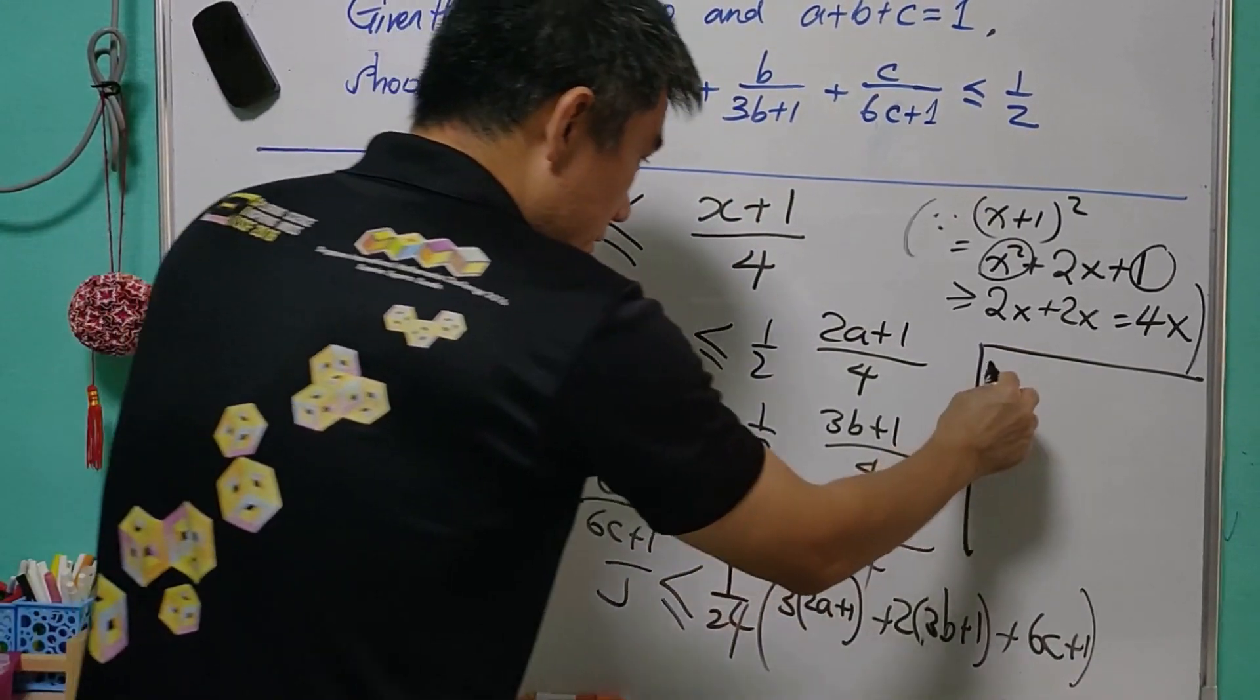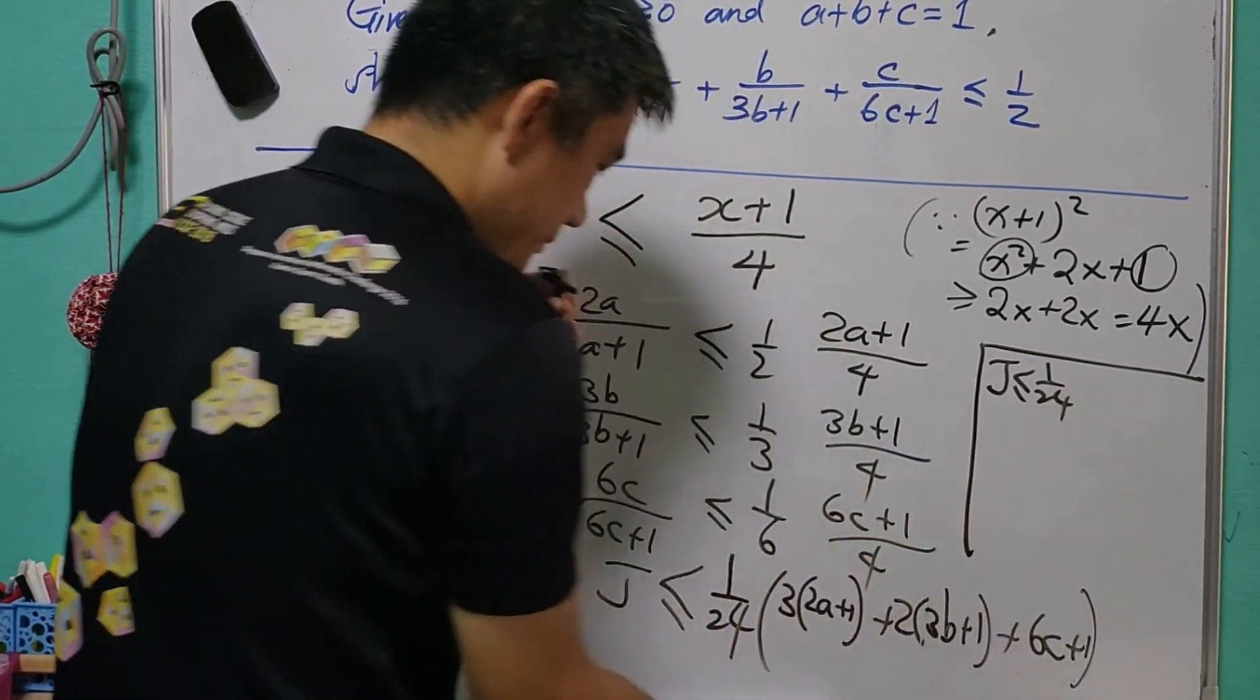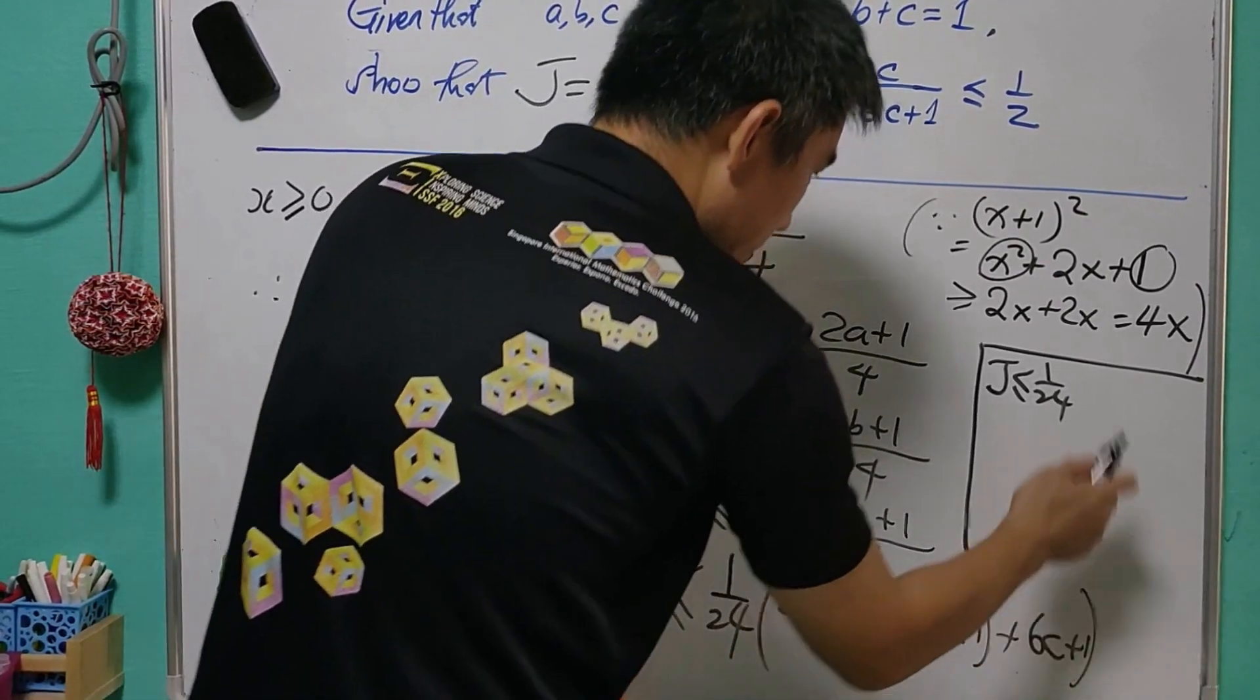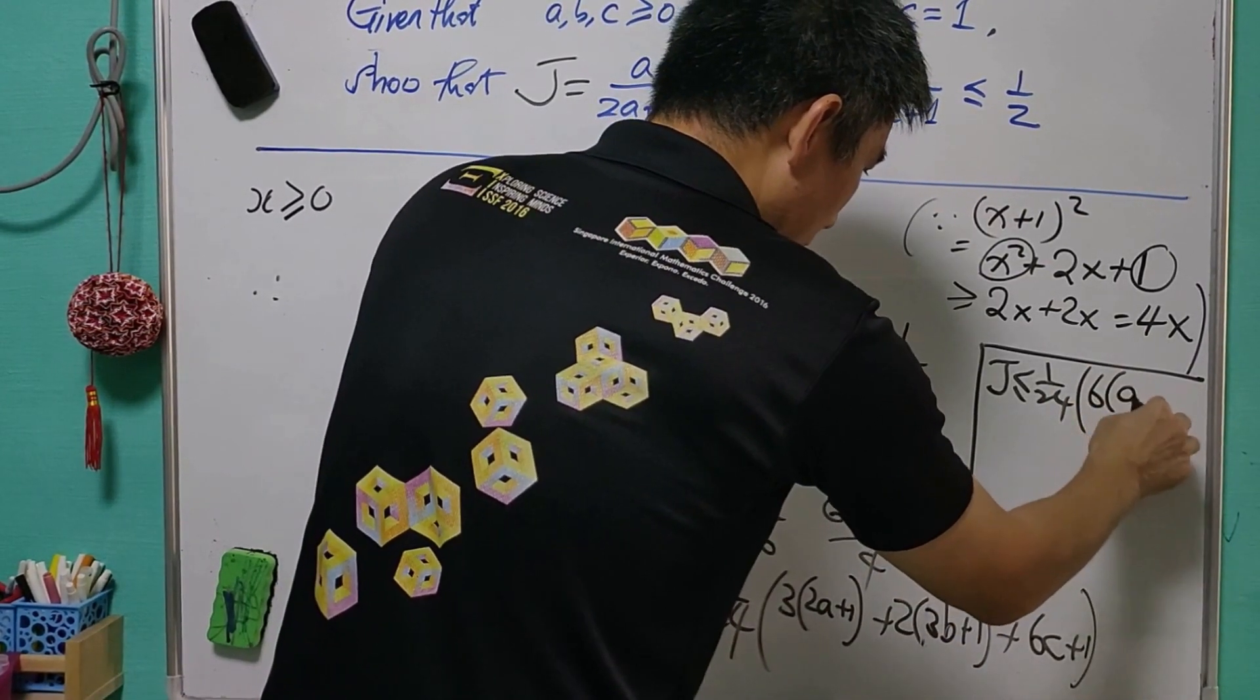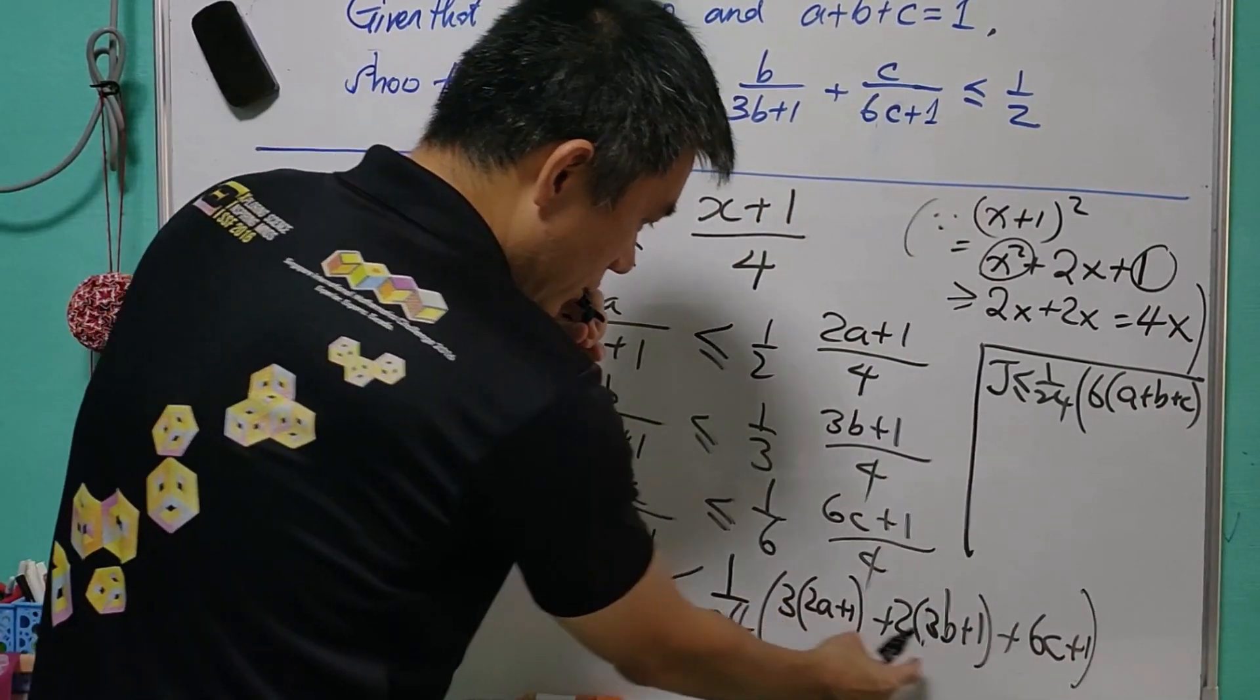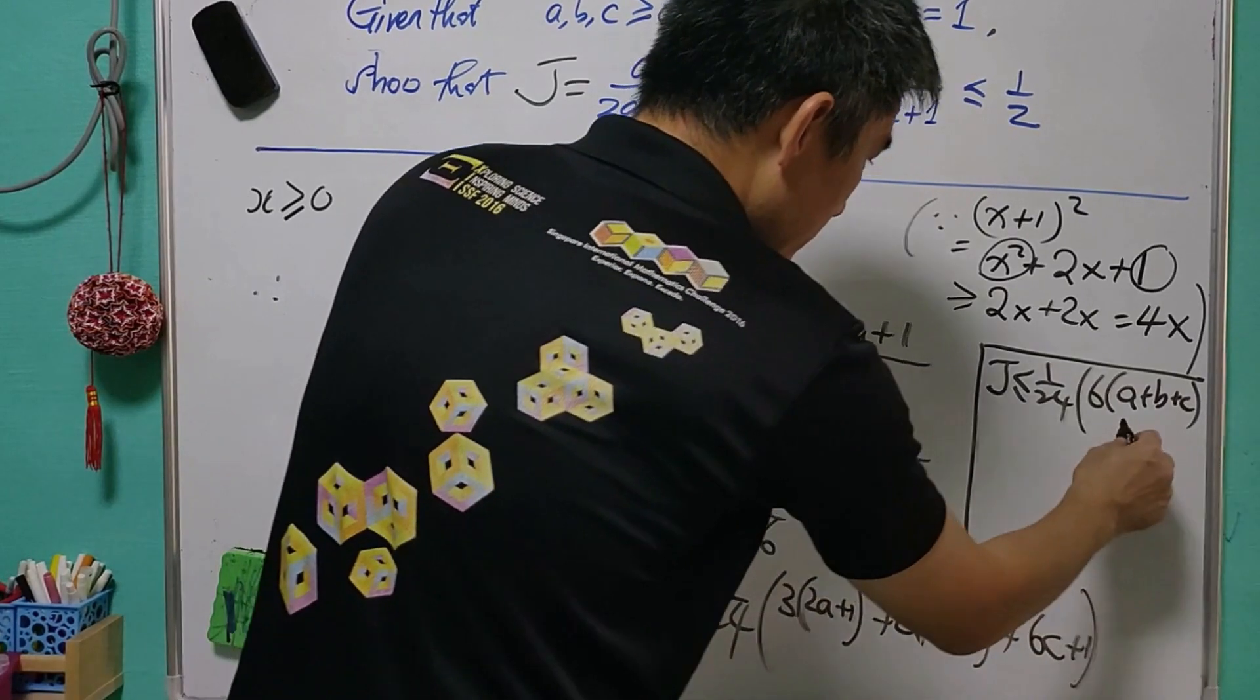And for this, J will be less than or equal to 1 over 24. We have 6A, 6B, and 6C, so that is 6A, B, and C. And that is 3, 2, and 1 plus 6.